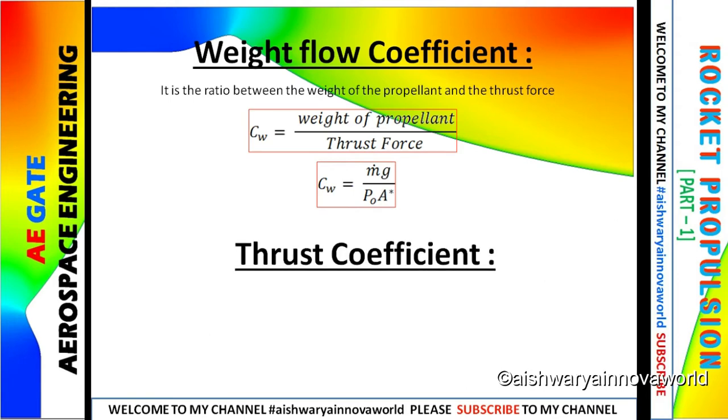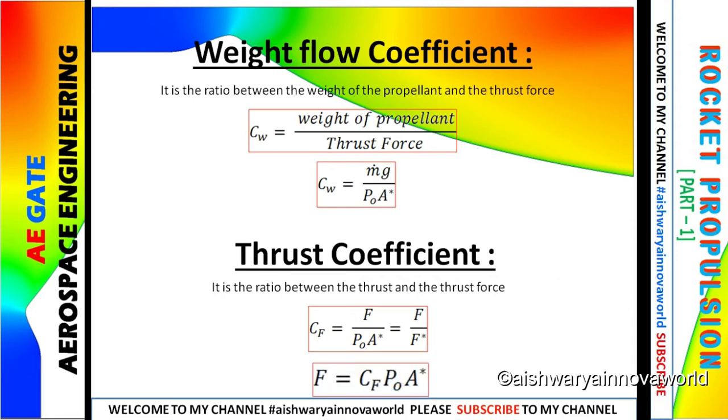Next comes thrust coefficient. Thrust coefficient is the ratio between the thrust and the thrust force, that is F by S star. Which can also be written by rearranging F equals to CF P0 A star. This is an important formula which is used for designing a rocket engine.